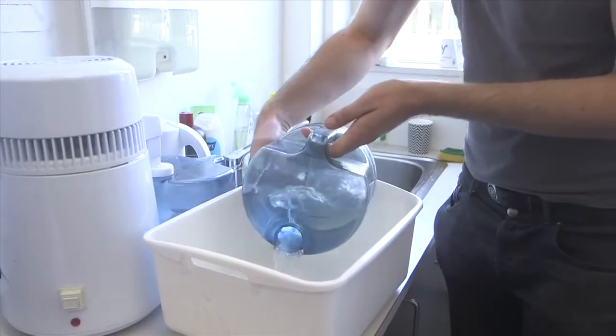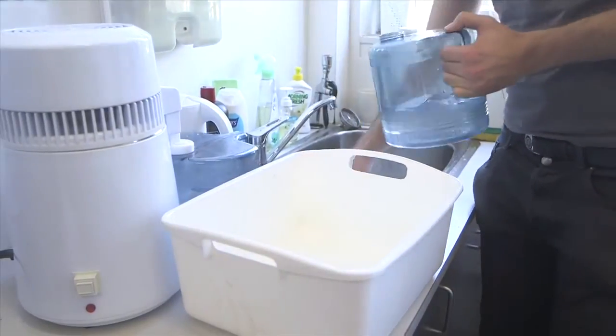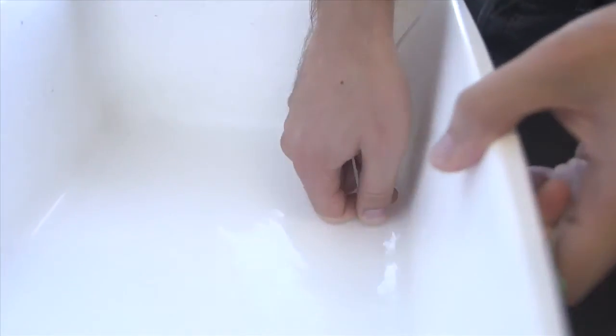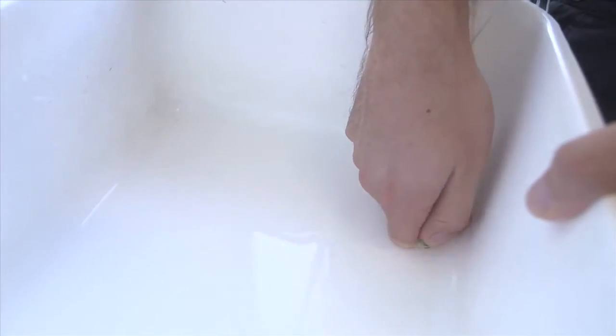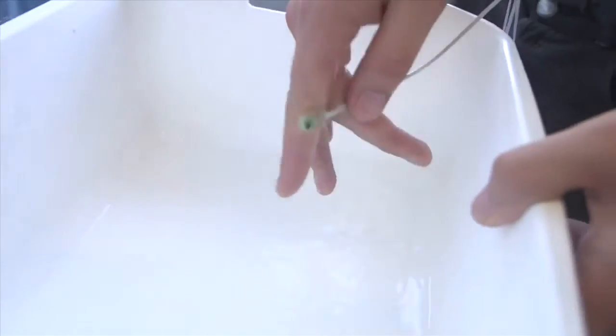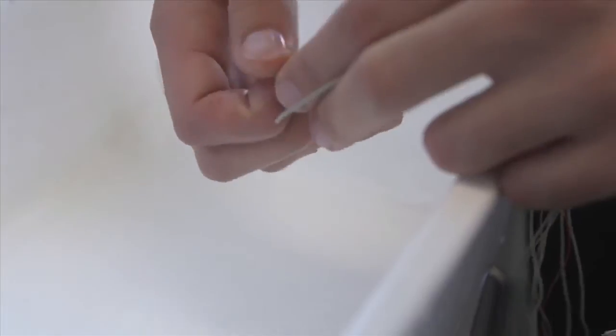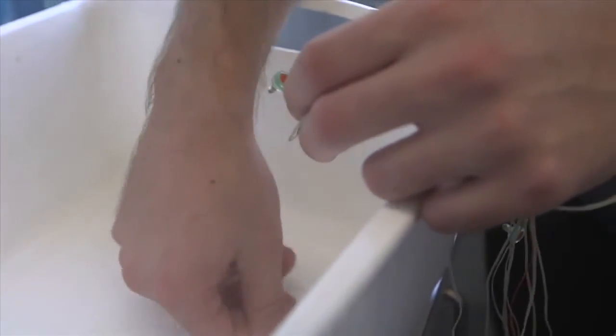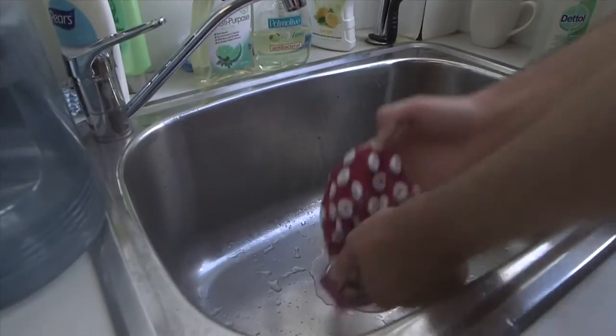We're now ready to clean the electrodes. Fill the white basin with 2 to 3 centimeters worth of distilled water. When cleaning the external electrodes, gently rub them with your finger to ensure that all the gel has come off, but be careful not to scratch them with your fingernail. Clean the electrodes one by one by wetting your fingertips and gently using them to clean each electrode. Make sure there's no leftover gel and that all the cables are untangled.